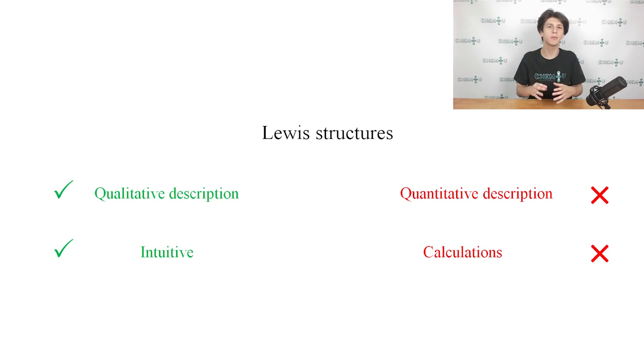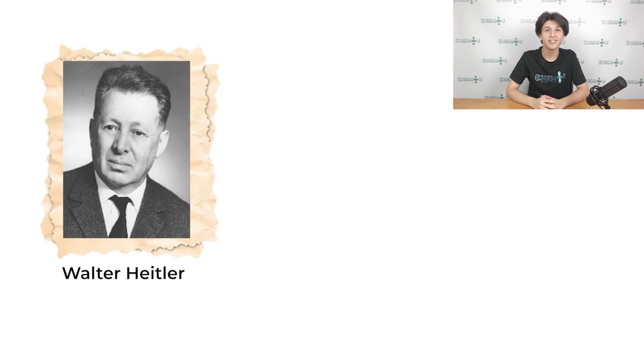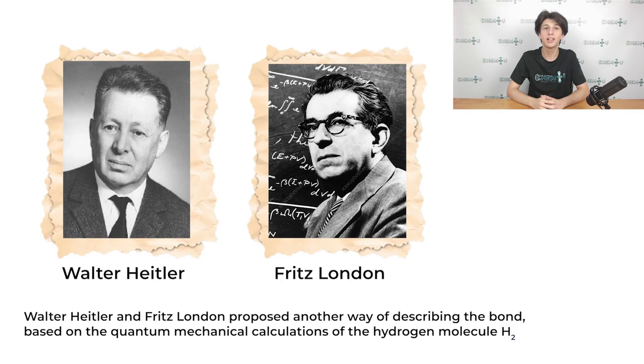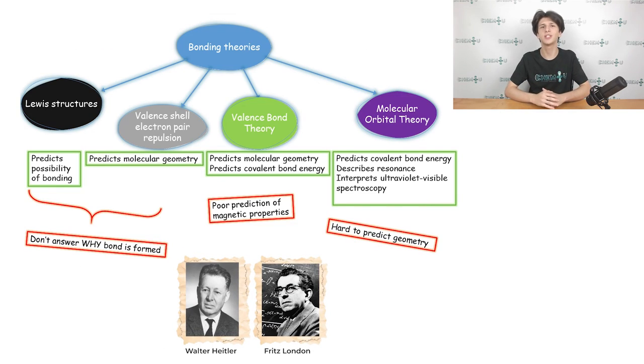To address this issue, Walter Heitler and Fritz London proposed another way of describing the bond, based on the quantum mechanical calculations of the hydrogen molecule H2. Eventually, their calculations became the basis for the creation of another theory, called the valence bond theory.